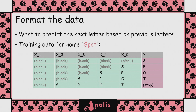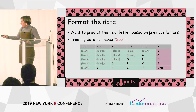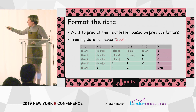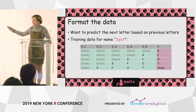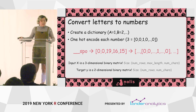What we want to do is predict, for each point partway through a name, what the next letter is. We take all the names in the database and decompose them into sets of each predicted next letter. For the name 'Spot' we can create five data points: predict the starting letter from blanks, then predict P given S, predict O given SP, and so on. At the end, 'SPOT' predicts the name is over. This is the training data. None of this has to do with deep learning — it's just data manipulation.